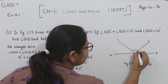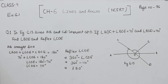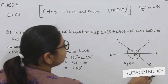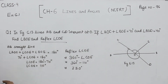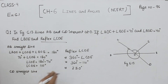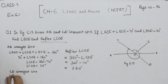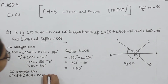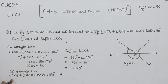So this is angle COE and this is the reflex of angle COE. Now we move on to finding angle BOE. For this, we will take the next straight line, which is CD. On line CD, we have angle COE plus angle EOB plus angle BOD. If we add them, we get 180°.